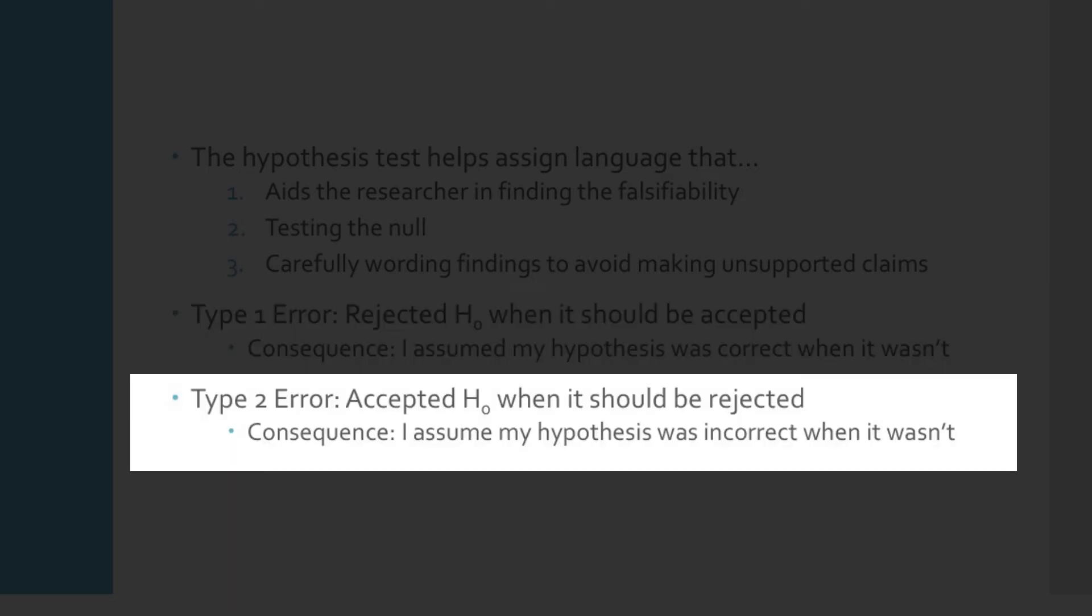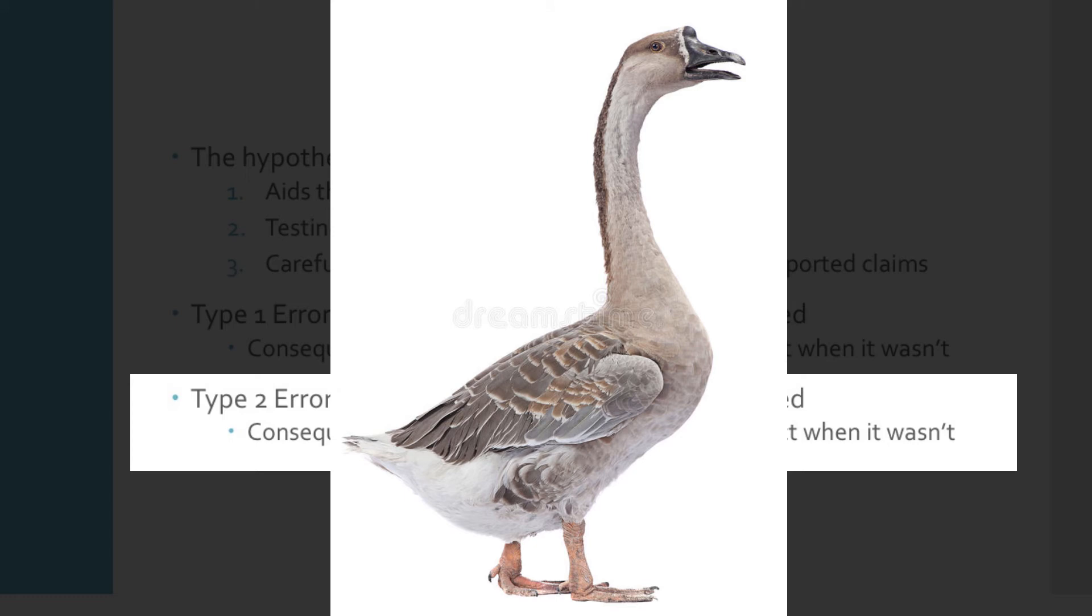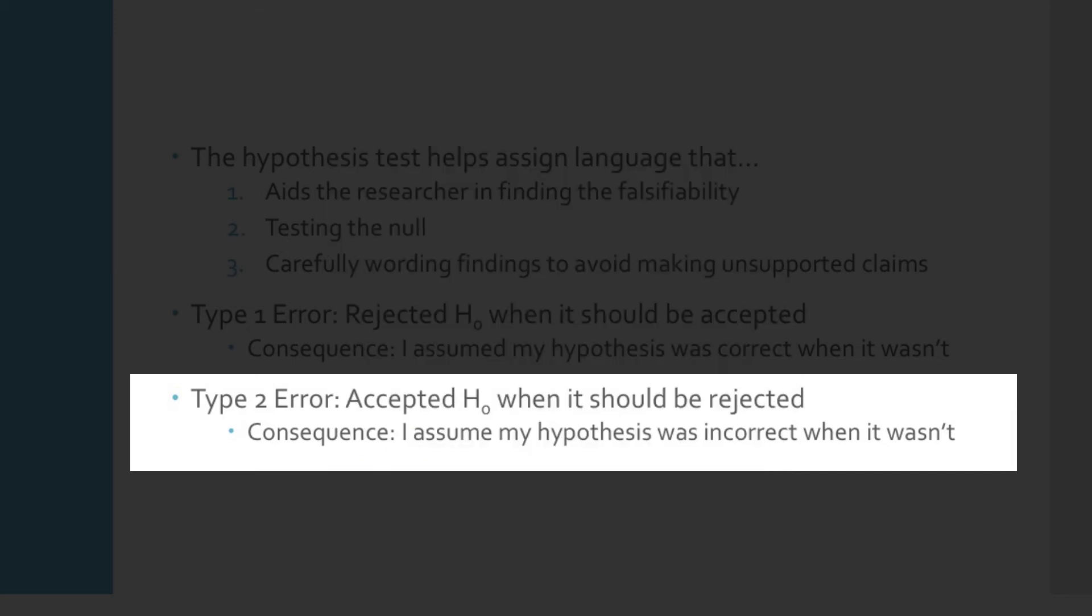If, however, I incorrectly fail to reject the null hypothesis and, in so doing, claim that the hypothesis was not supported, that is called a Type 2 error. In the case of the swans, imagine that my sample of 100,000 swans had a gray goose. Since I'm not a very good ornithologist, I assumed that the gray goose was a darkly colored swan. So I accepted the null hypothesis that not all swans are white, but that was just because I couldn't tell the difference between a goose and a swan. If I were a better ornithologist, my hypothesis would have been supported.